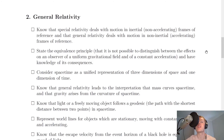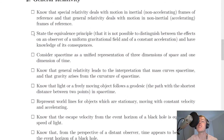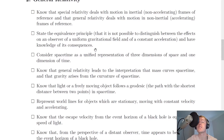Section two covers general relativity. You need to know that special relativity deals with motion in inertial, non-accelerating frames of reference, and that general relativity deals with motion in non-inertial, i.e. accelerating frames of reference. You need to be able to state the equivalence principle — that it is not possible to distinguish between the effects on an observer of a uniform gravitational field and of a constant acceleration — and know its consequences.